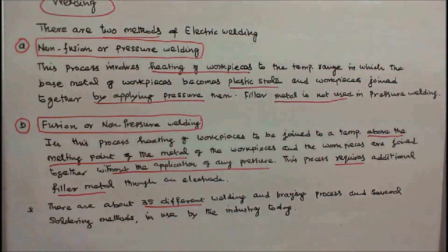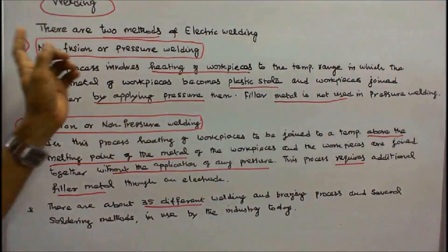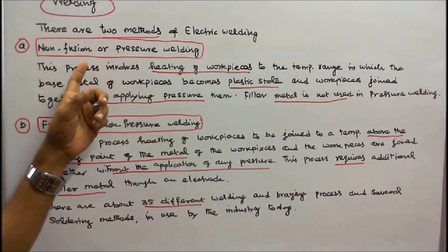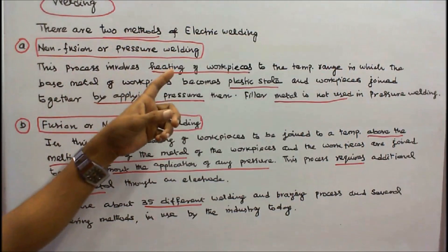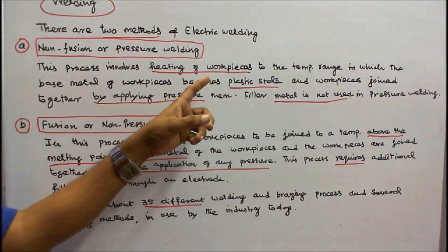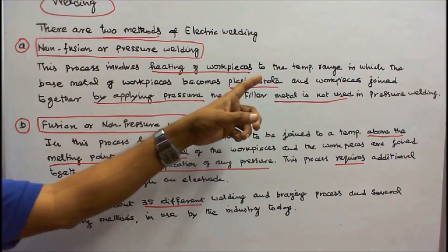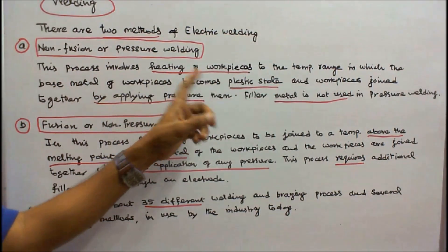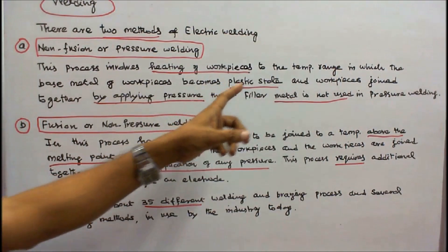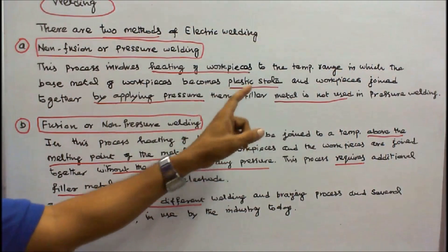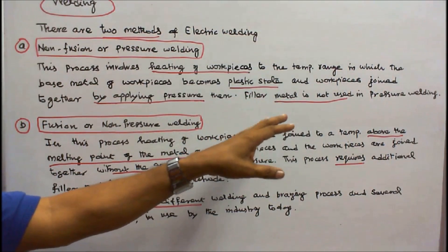This class we discuss about electric welding processes. There are two methods of electric welding. One is non-fusion or pressure welding. This process involves heating of work pieces to the temperature range in which the base metal of work pieces becomes plastic state, and work pieces join together by applying pressure. Filler material is not required in pressure welding.